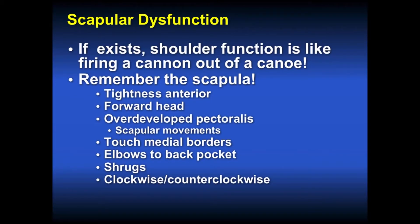It is very important to assess the scapula for symmetry. Scapular dysfunction usually occurs after the glenohumeral joint has had a problem like MDI — the scapula will try to follow the humeral head. You may notice an asymmetry where typically the scapula goes away from the spine and superiorly. Remember that there can be anterior tightness, a forward head position, and sometimes overdeveloped pectoralis muscles. Touch the medial borders of the scapula and have them put their elbows in the back pocket. Communicate to the patient about scapular position using the analogy of a clock face.